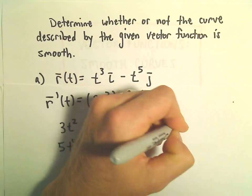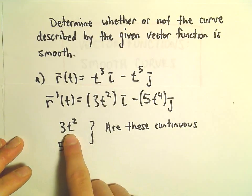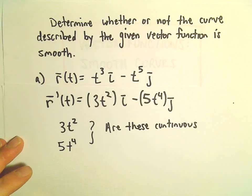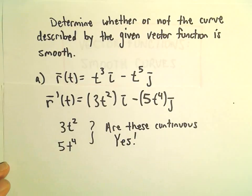And notice there is no domain given, so we'll assume it's over all values of t. But 3t squared is definitely continuous. 5t to the fourth is certainly continuous. So yes, we don't have any problems there.